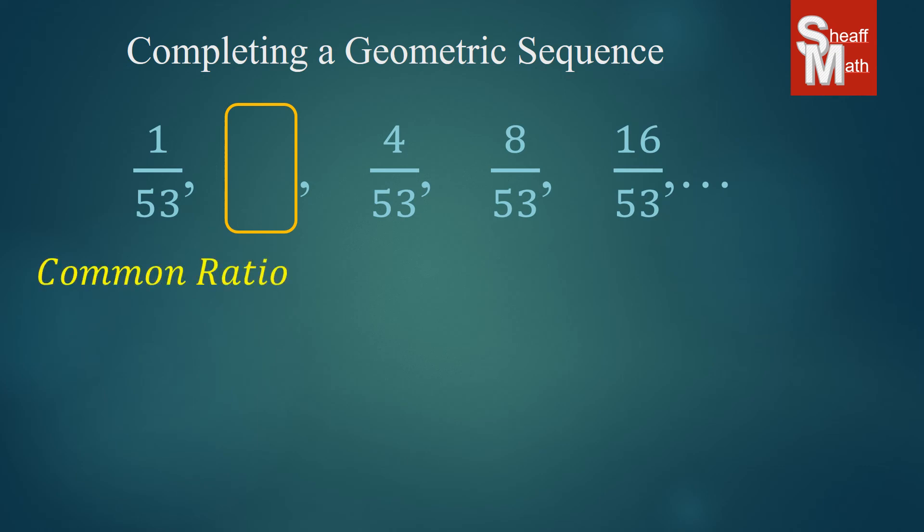So what we do is we take two numbers. I'm going to take 8 over 53 and divide it by 4 over 53. And if you remember dividing fractions, we multiply the reciprocal of the second number. And so we flip that 4 over 53 to 53 over 4. And just to kind of make it a little bit quicker and easier, we can cancel out those 53s on top and bottom. And I'll just keep the 8 and the 4 there. 8 divided by 4 is 2.